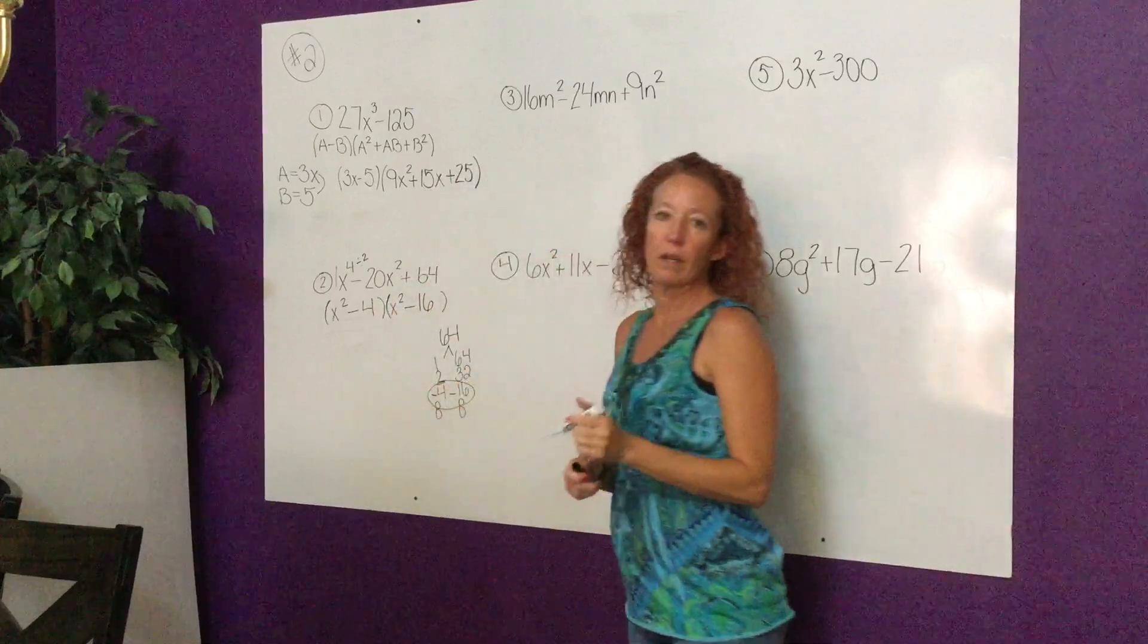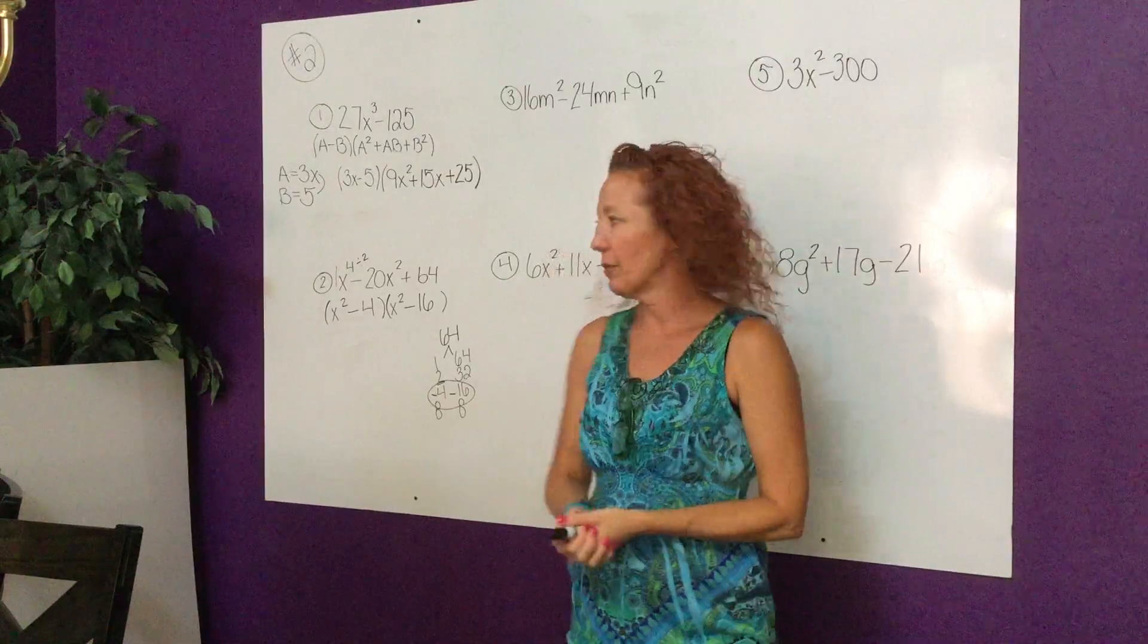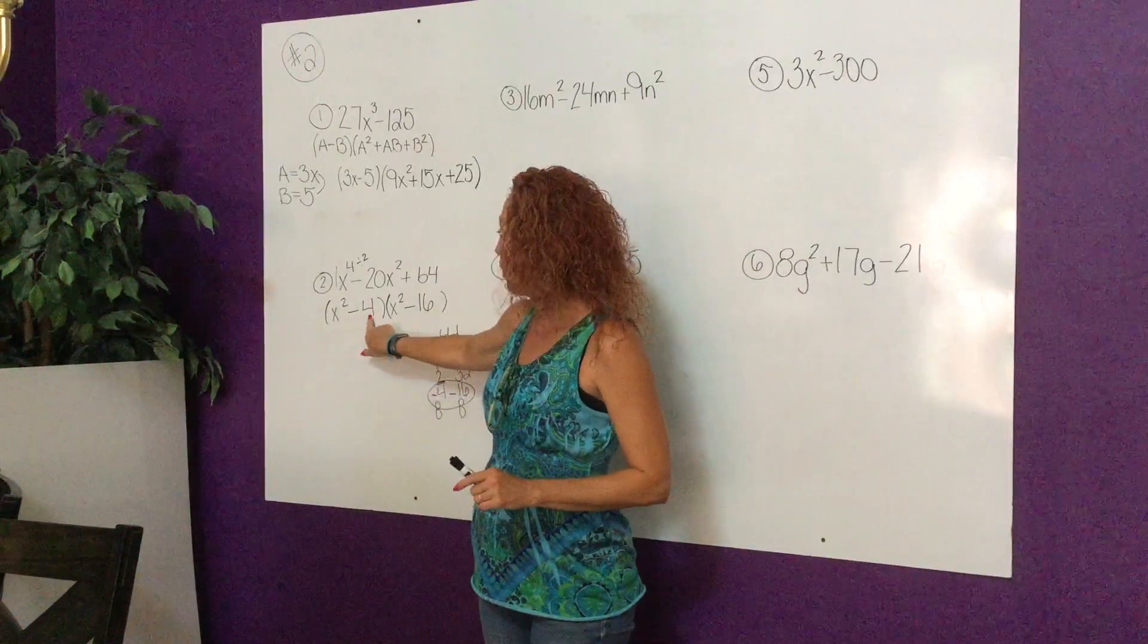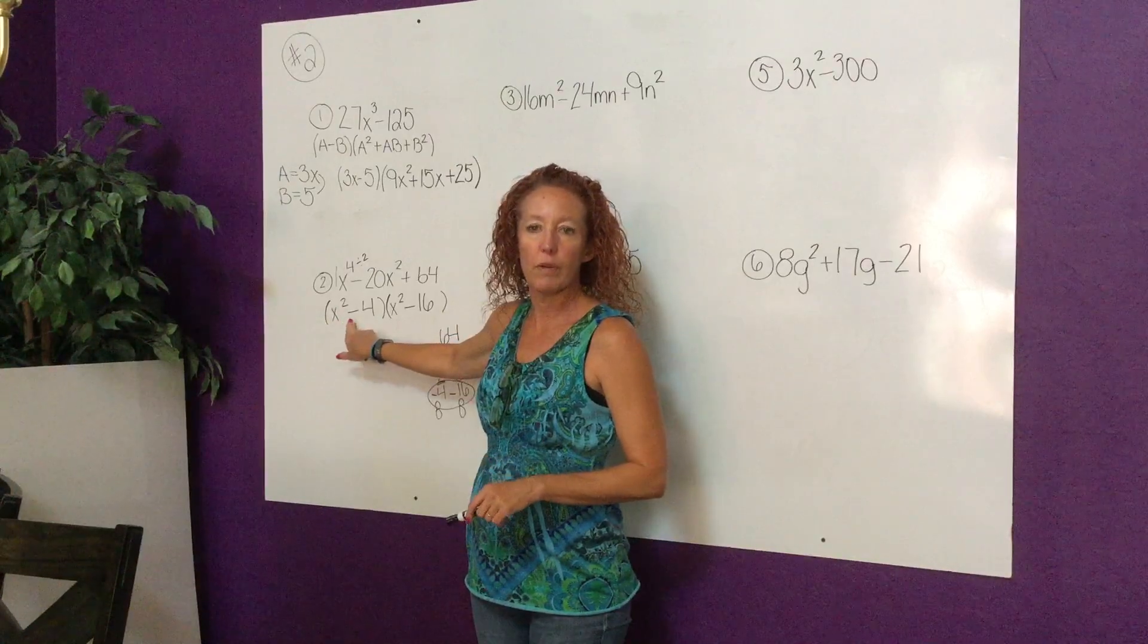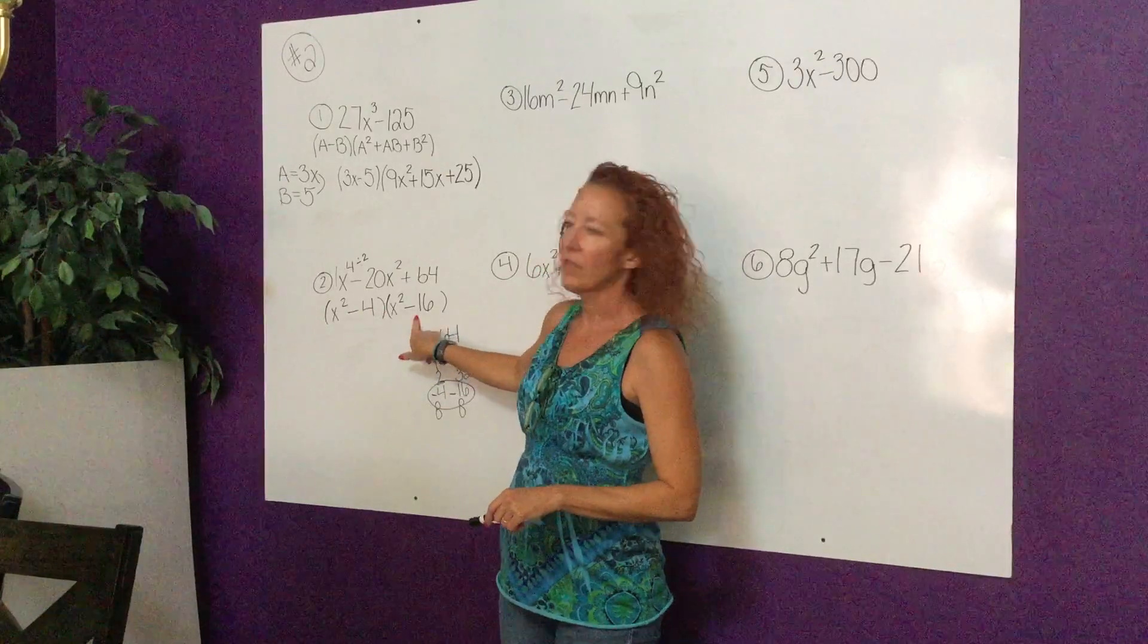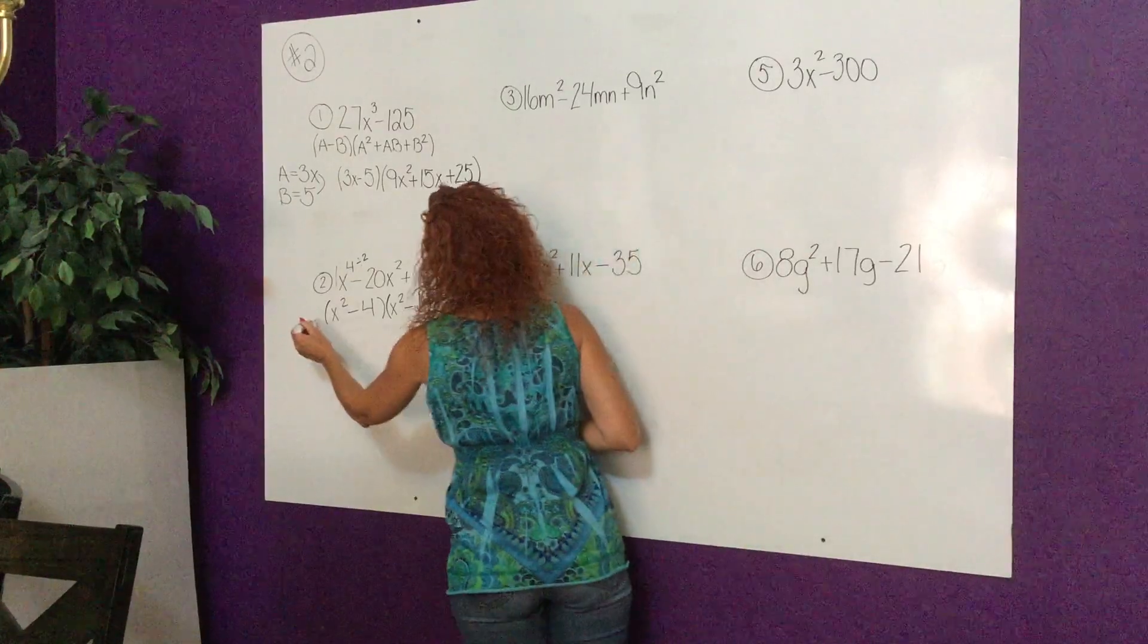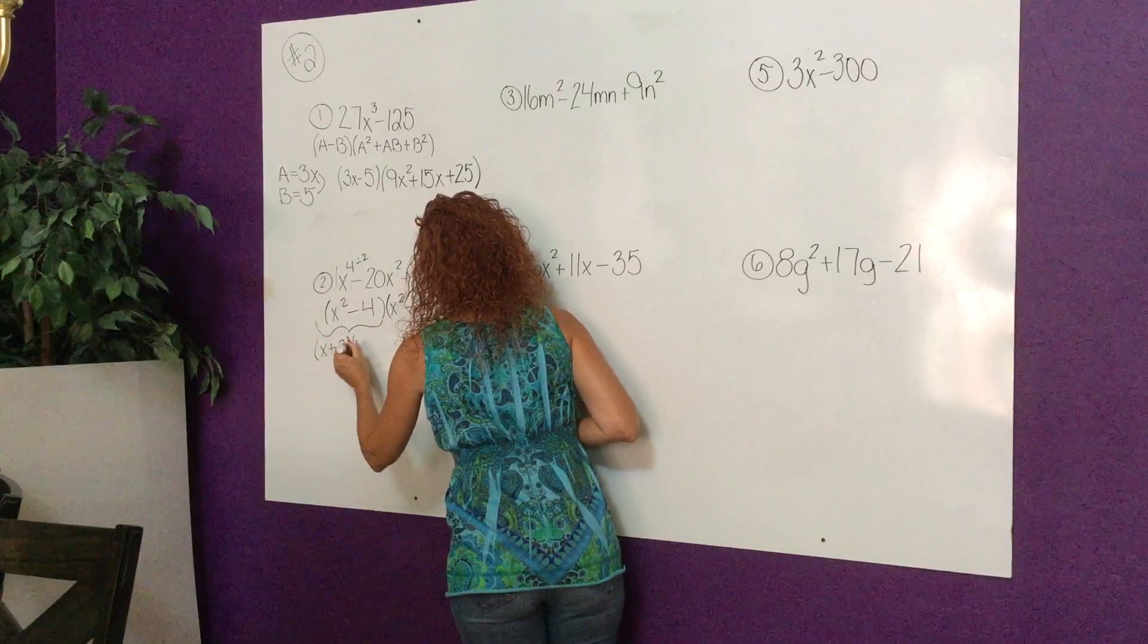So we are done with that step. However, this one has a great trick to it because I chose this one very specifically. What is true here? Perfect square, perfect square, and a negative sign, so this can factor more. This is the difference of two perfect squares, same with this back one. So when I factor this one more step I get (x + 2)(x - 2)(x + 4)(x - 4). That is the final answer.